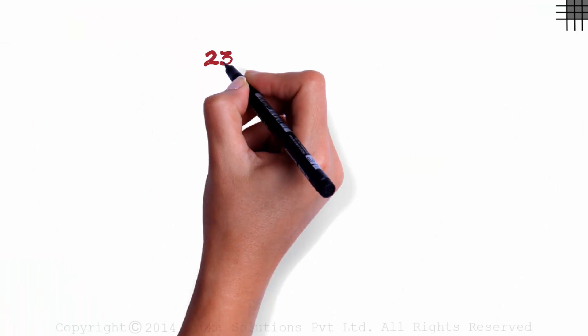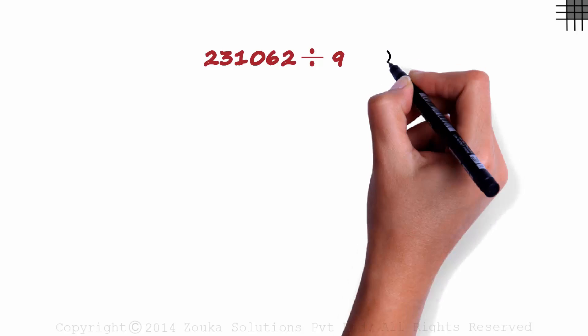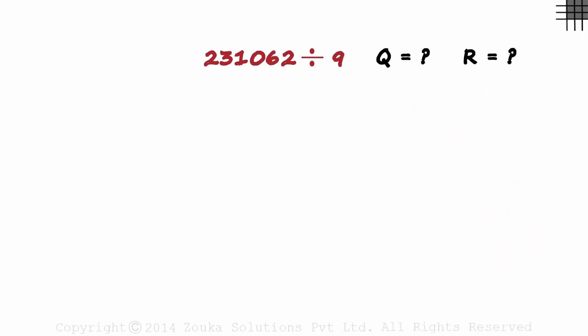Let's try out another one. 231,062 divided by 9. Find the quotient and the remainder. Pause the video, take your time and try finding the quotient and the remainder.